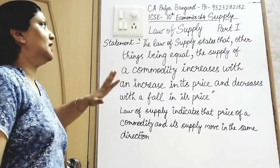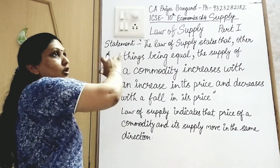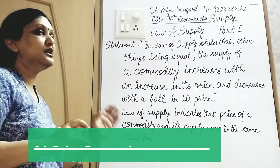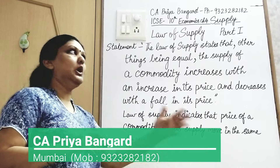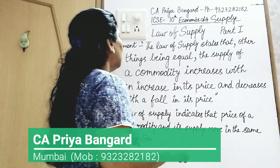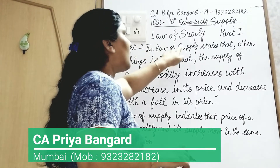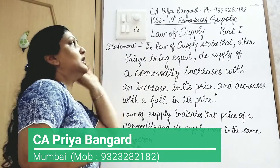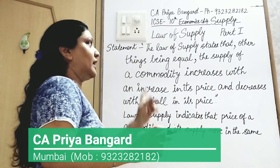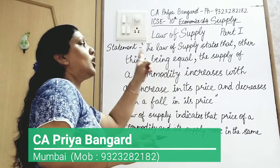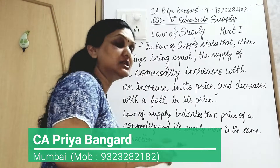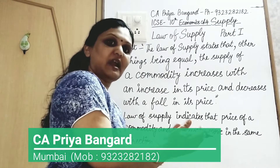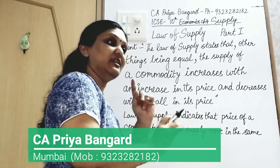Part 1: Statement of the Law. We start the law with the statement of the law. The law of supply states that 'other things being equal' — or other things being constant — because the law will apply only when the surrounding things are constant and not changing.